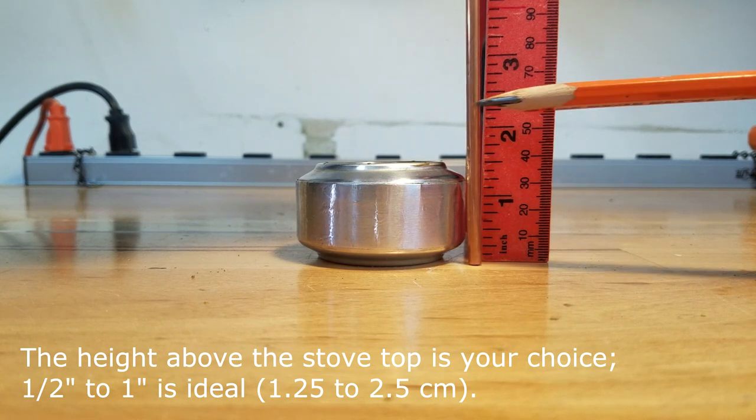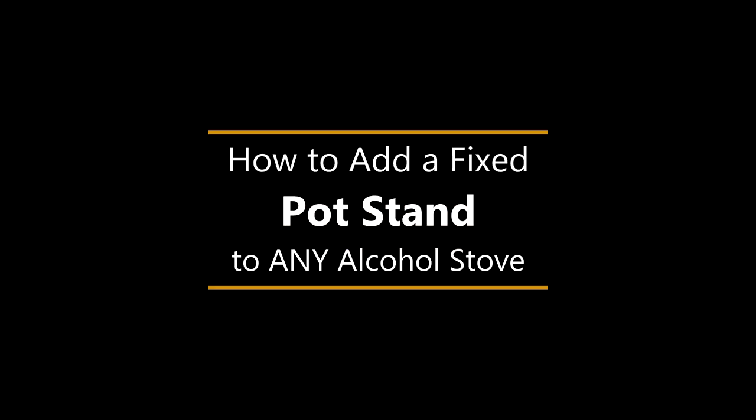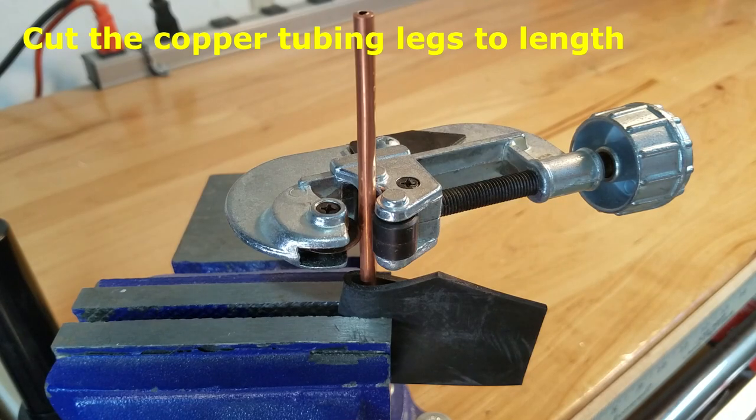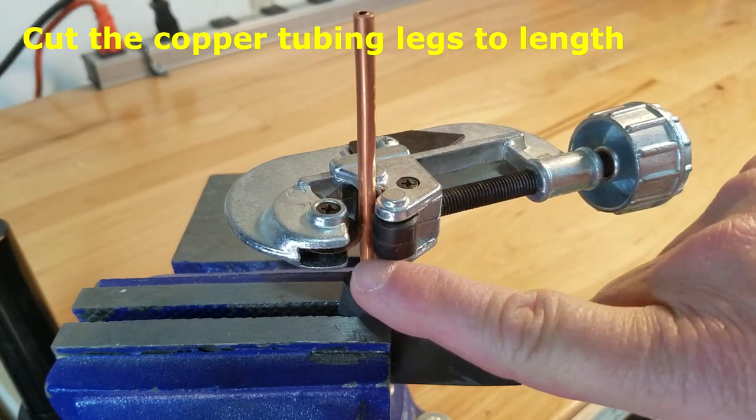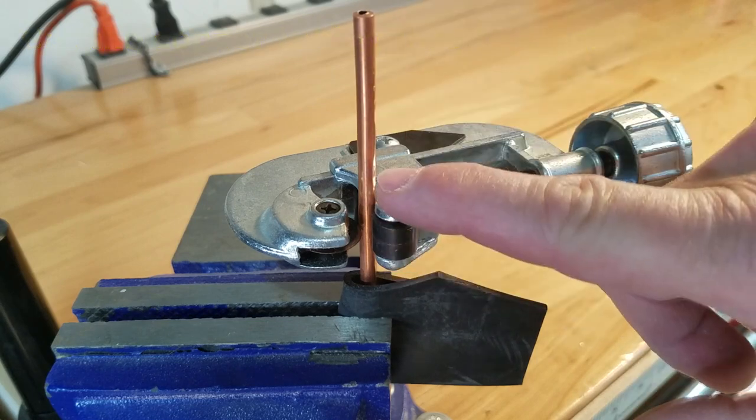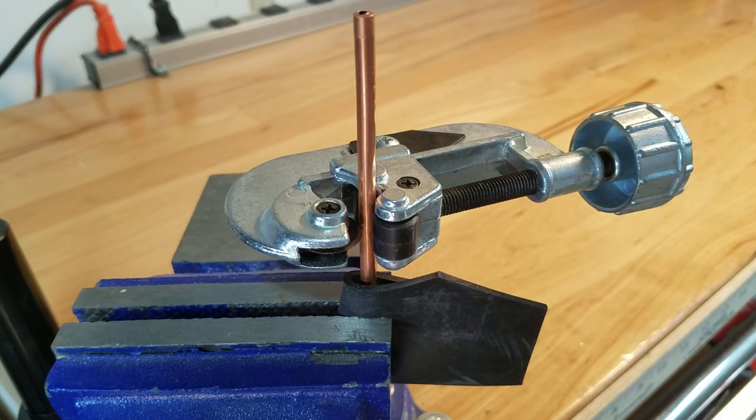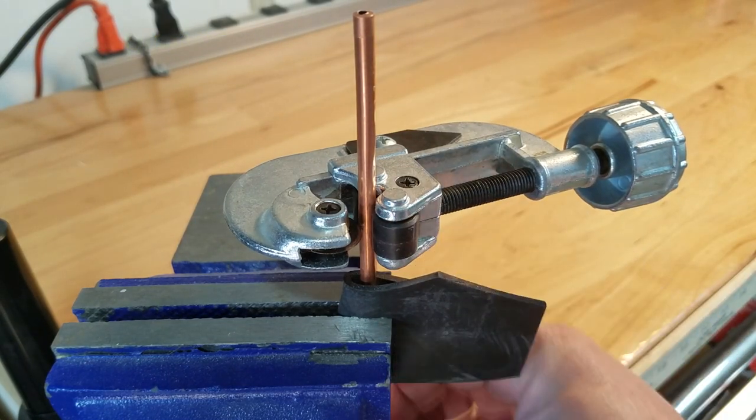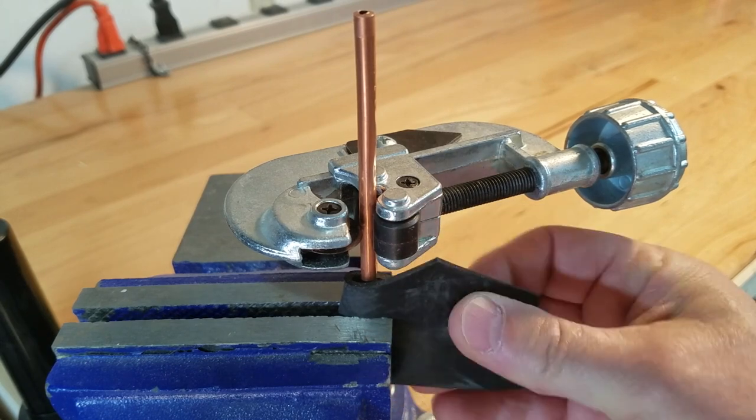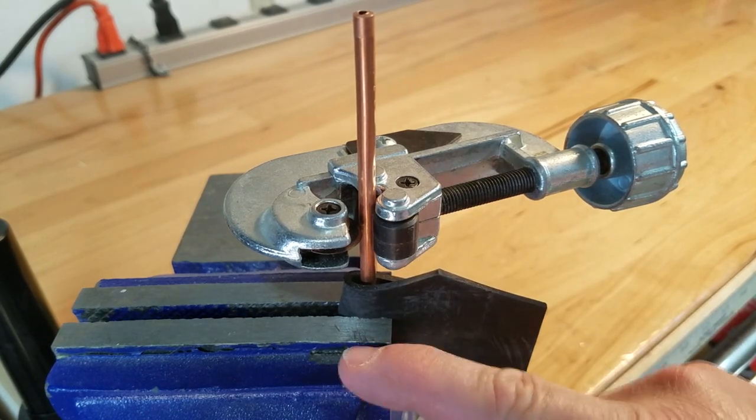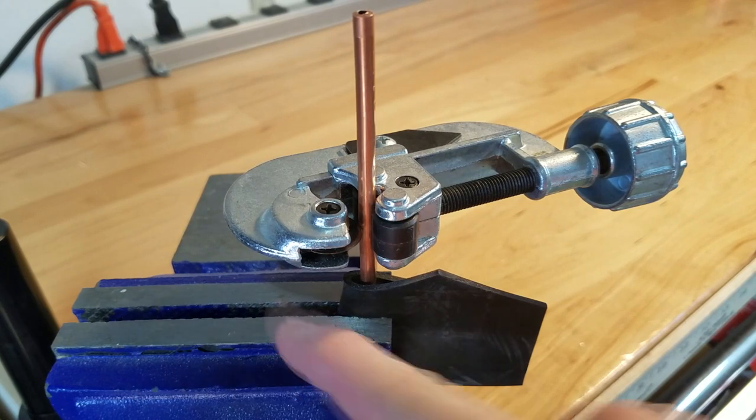That will be the length of each leg. Now it's time to cut the pipe at the mark that you've made relative to the height of the stove. Notice I've put a piece of rubber around this copper pipe as I put it into the vise so the jaws won't mark the pipe.